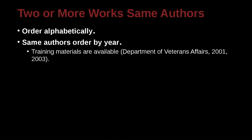Let's take a look at an example. Here we have: training materials are available, Department of Veterans Affairs. Now this is not a person, but when we don't have a person, sometimes we can use the name of the organization. So this organization is Department of Veterans Affairs, comma 2001, comma 2003. That means we have two research papers that we've drawn from, and we're going to use a comma and order them by year — 2001, the earliest year, then 2003, the later year.